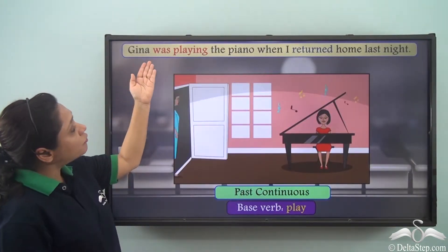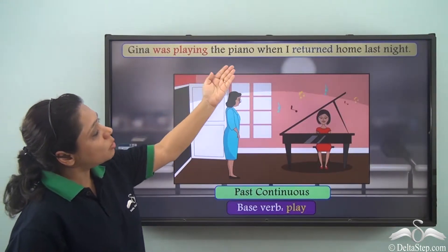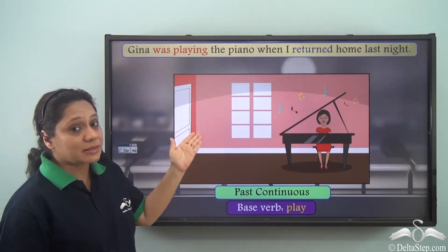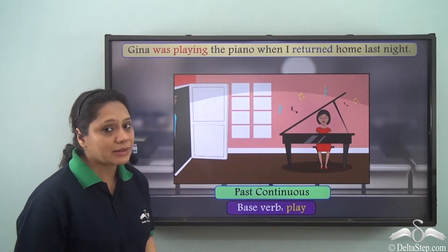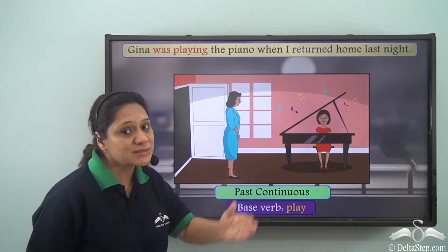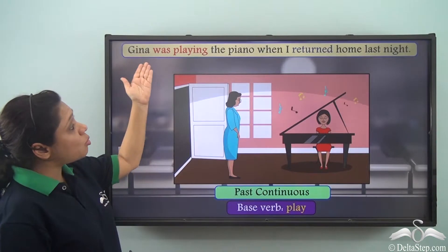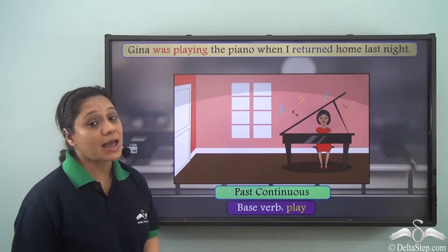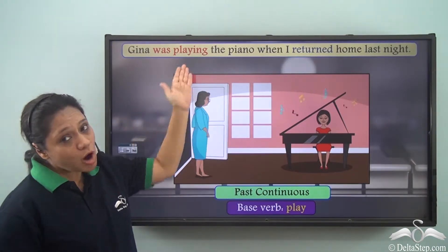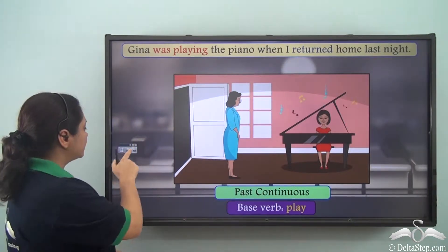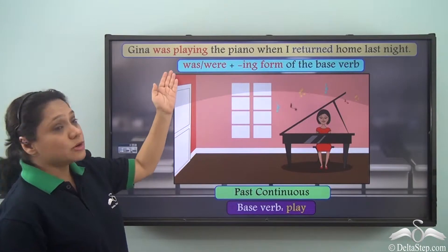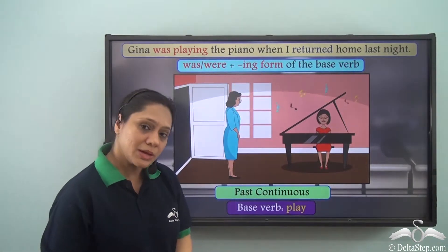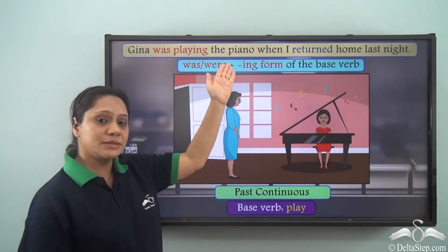'Gina was playing the piano when I returned home last night.' When this lady returned home at night, Gina was playing the piano. So 'was playing' is in the past continuous tense. The verb 'was playing' is formed by using 'was' or 'were' with the -ing form of the base verb.